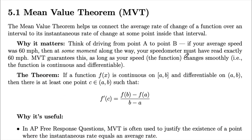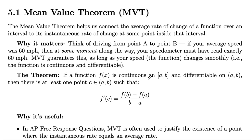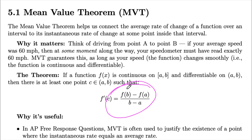The MVT basically helps us connect the average rate of change to the instantaneous rate of change. The instantaneous rate of change is given by the derivative, whereas the average rate of change is found using the typical algebra formula of y2 minus y1 over x2 minus x1. This is just the calculus notation, but it's the exact same thing you've already been doing throughout your algebra courses.